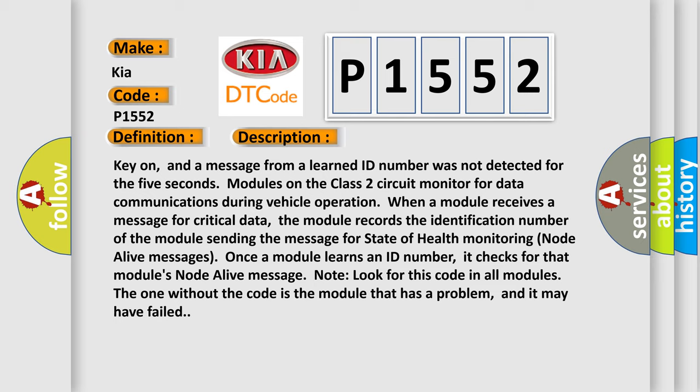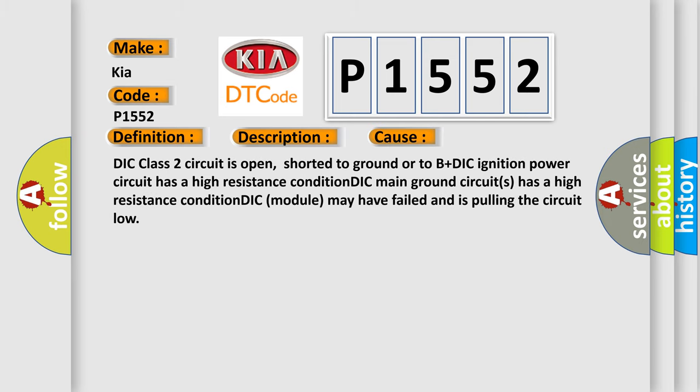This diagnostic error occurs most often in these cases: DIC Class 2 circuit is open, shorted to ground or to B+; DIC ignition power circuit has a high resistance condition; DIC main ground circuit has a high resistance condition; or the DIC module may have failed and is pulling the circuit low.